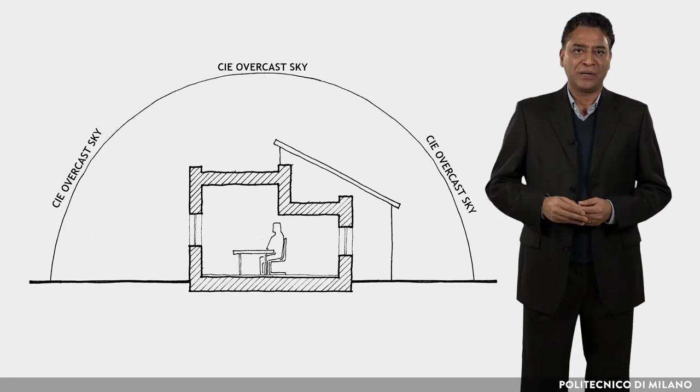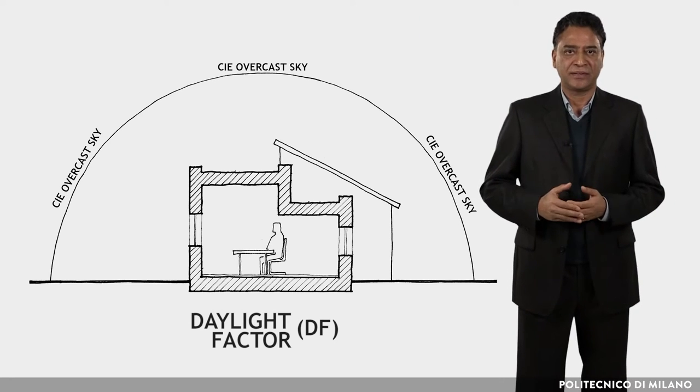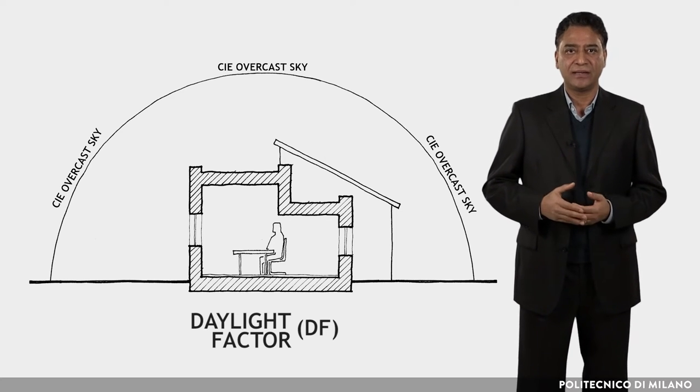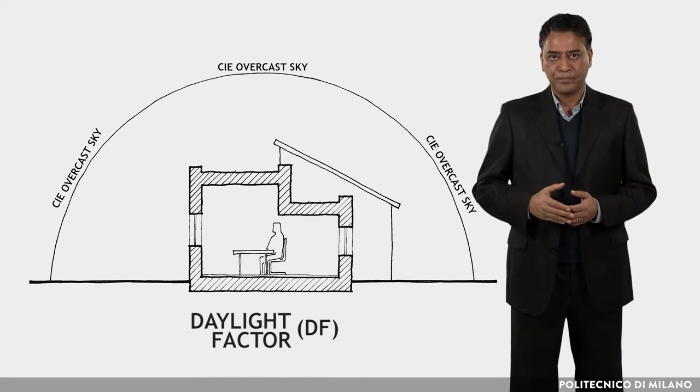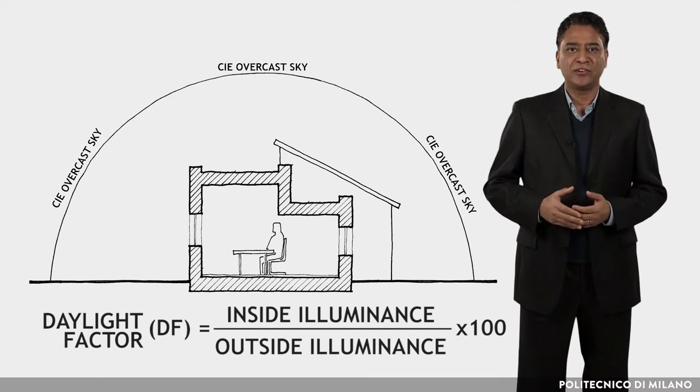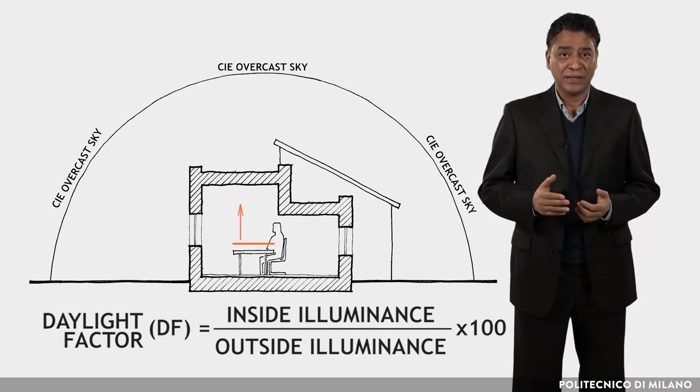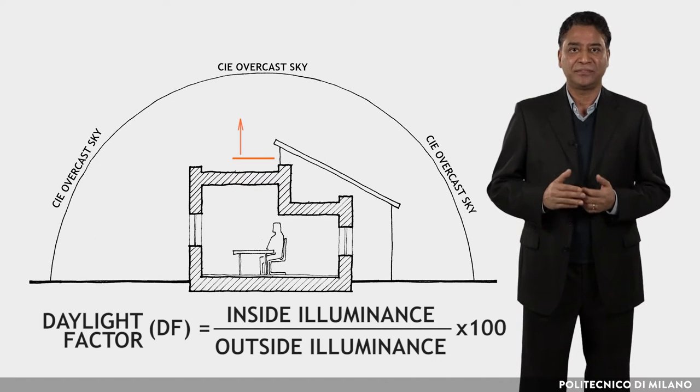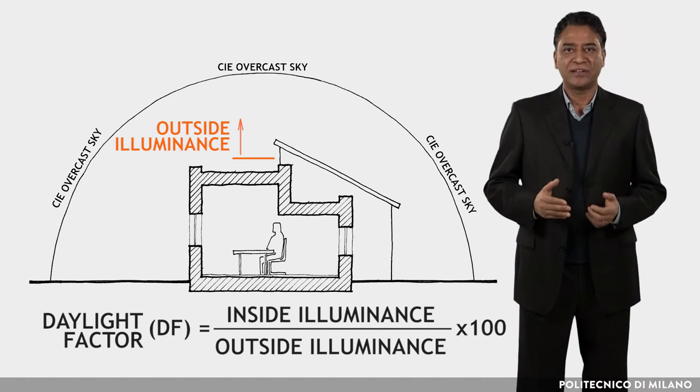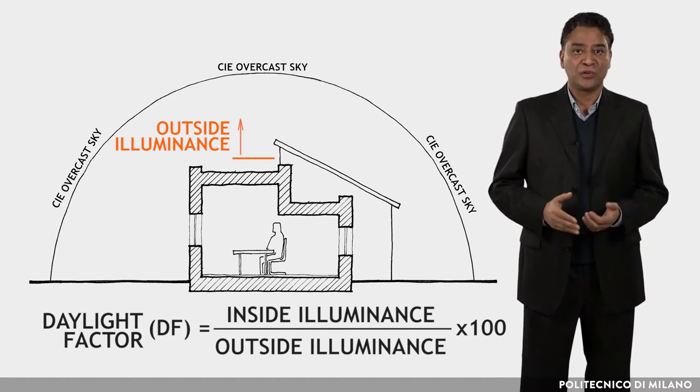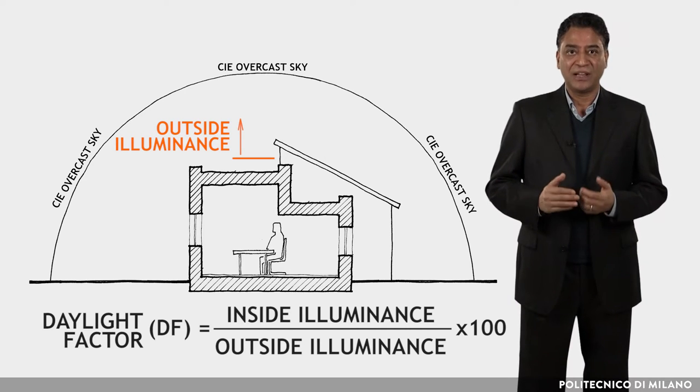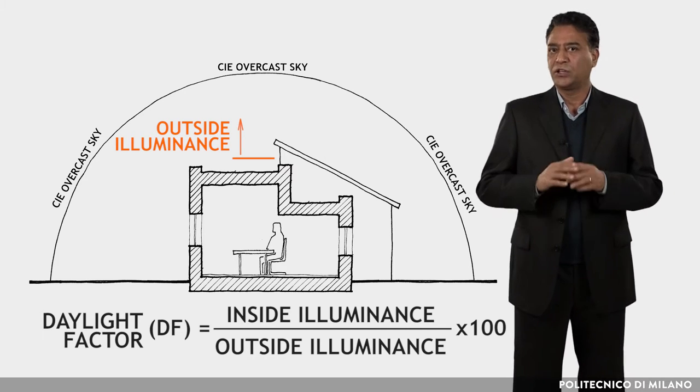Another important parameter is the daylight factor, which is a measure of the amount of daylight available in a space. It is defined as the ratio of the illumination of the working plane in a given position to the illuminance that would be under identical conditions of time and place on a horizontal surface exposed outdoors to receive light from the entire sky with no obstruction.